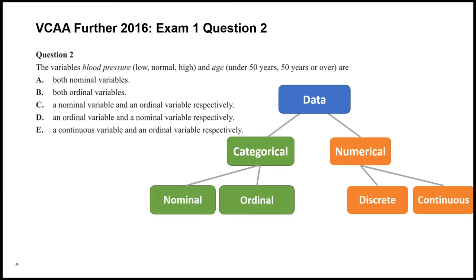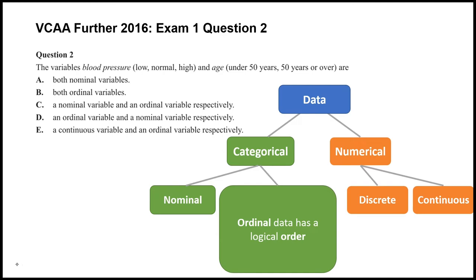Blood pressure is not a number—here it's measured as low, normal, or high, so it's categorical data. For ordinal data, it just needs to have a logical order. Low, normal, high would be a logical order, so that is an ordinal variable. As for age, 50 is a number, but we're only looking at two categories: either under 50 or 50 plus. So that's also categorical, and there's definitely an order there, so that's also ordinal.